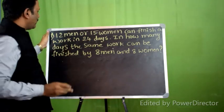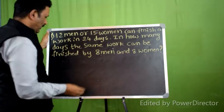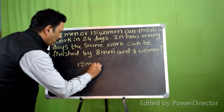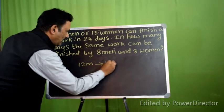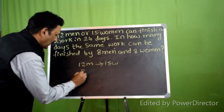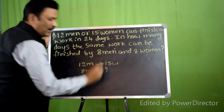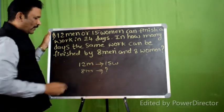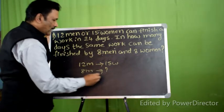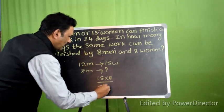We need to change the number of 12 men and 15 women, and convert to 8 men. This is 15 into 8 divided by 12.